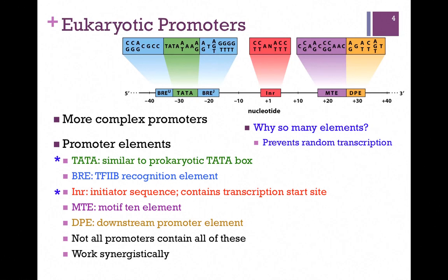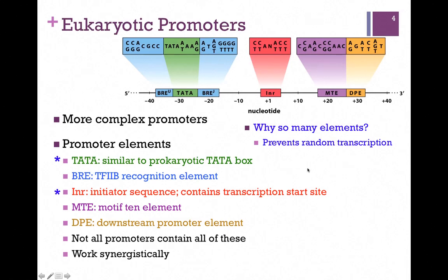Highlighted in green here is the TATA box, which is similar to the prokaryotic TATA box. We also see a BRE element, which is recognized by transcription factor 2B — and we'll talk about TF2B in just a moment. There's also an initiator sequence in the center, and that contains the transcription start site, noted as plus 1. There are also downstream elements: an MTE, or motif 10 element, and a DPE, a downstream promoter element. The portions of eukaryotic promoters you are expected to remember are highlighted with an asterisk. You need to know the TATA box and the initiator sequence, because that contains the transcription start site.